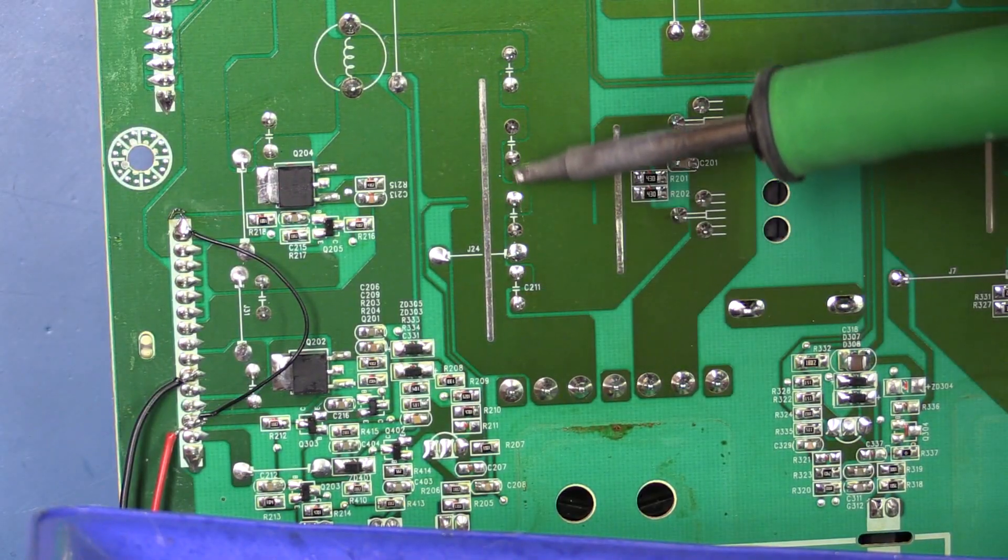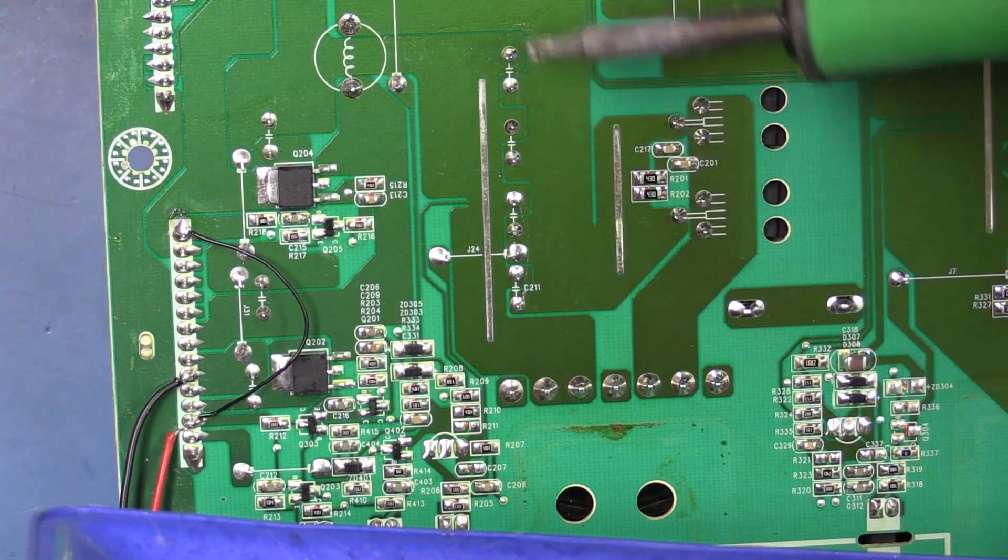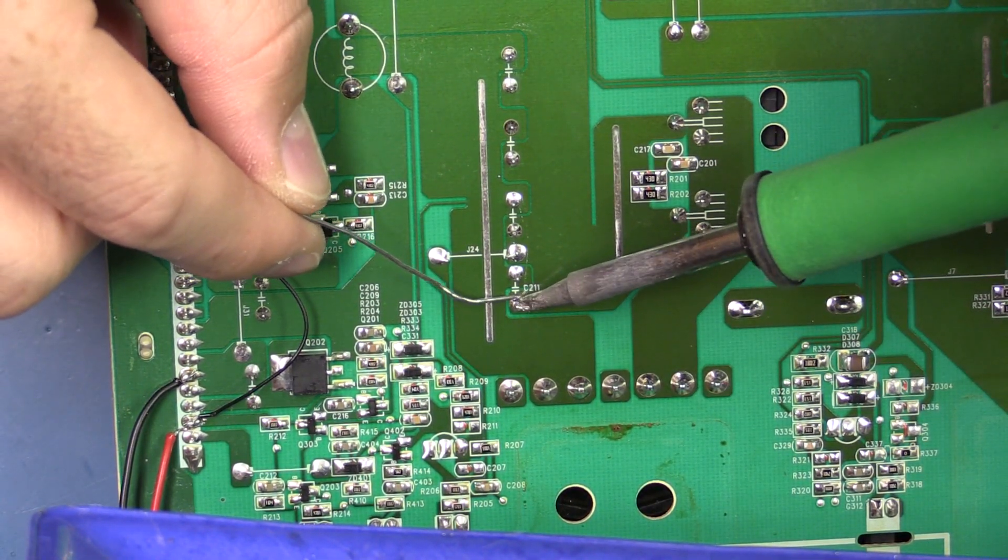On the back side over here is where the joints are for the legs of the capacitors. I'm going to start by adding some solder to each joint.